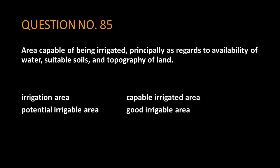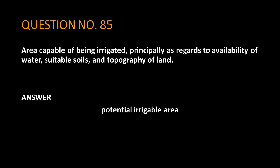Question No. 85. Area capable of being irrigated, principally as regards to availability of water, suitable soils, and topography of land. The answer is potentially irrigable area.